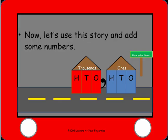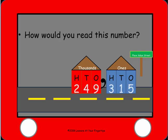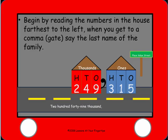Now let's use this story and add some numbers. How would you read this number? Remember, the red house or the second family and the ones house have different last names now. You start by reading the numbers in the house farthest to the left, and when you get to the comma — which is the gate — you say the last name of the family. So for example, you would say two hundred forty-nine thousand three hundred fifteen.